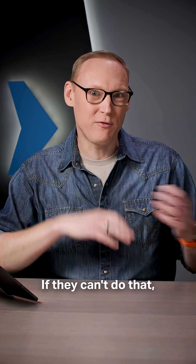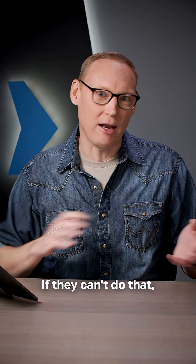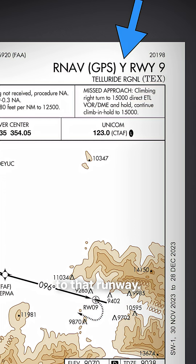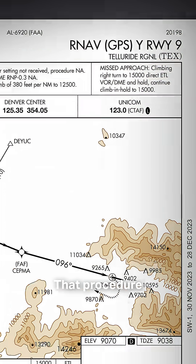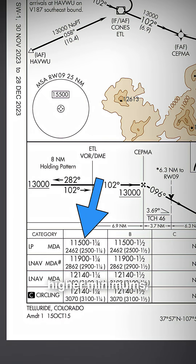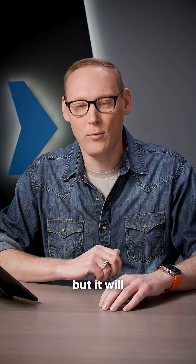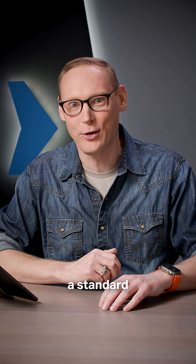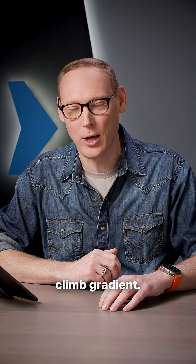If they can't do that, then they're going to create another procedure to that runway. That procedure usually is going to have higher minimums, but it will generally use a standard missed approach climb gradient.